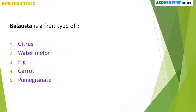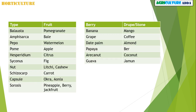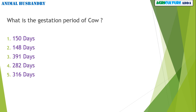Options for the balusta fruit type question are: citrus, watermelon, fig, carrot, and pomegranate. The answer is that balusta is the fruit type of pomegranate. Please note this table and take a screenshot — it will be helpful for many other exams.